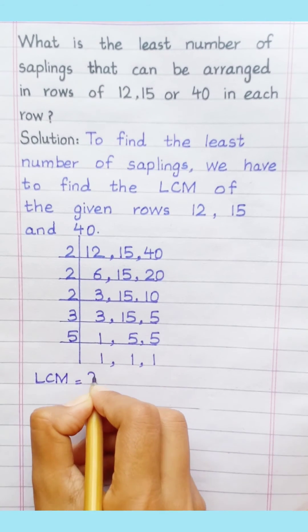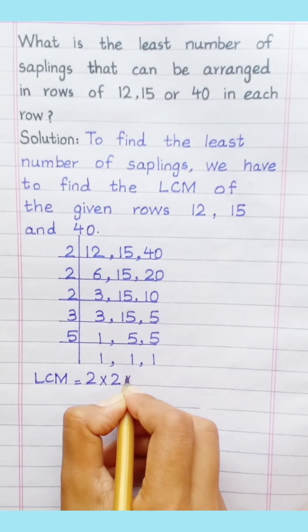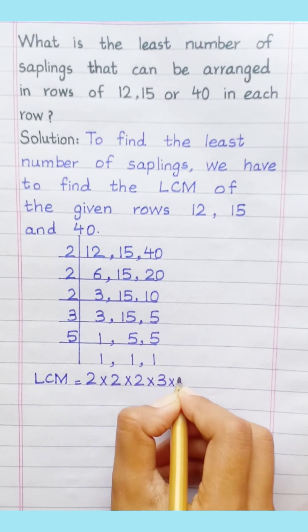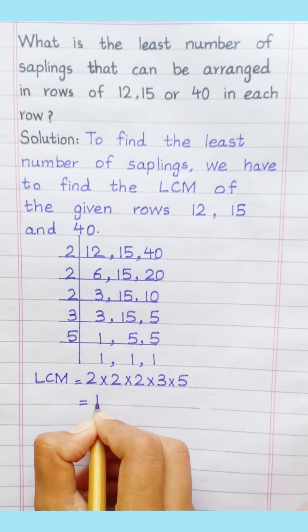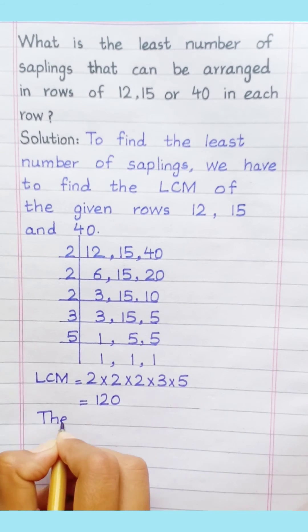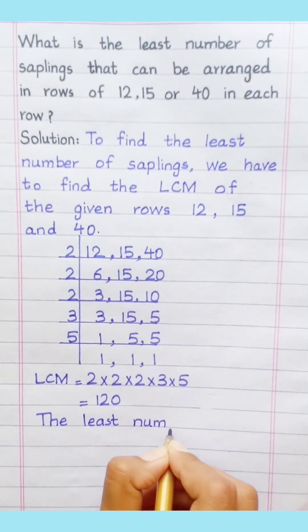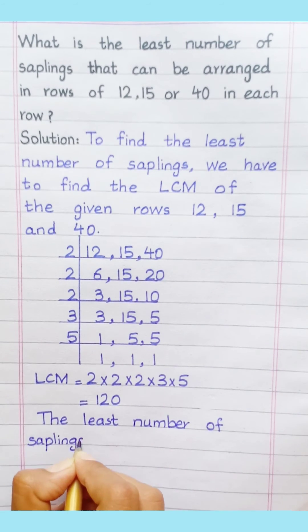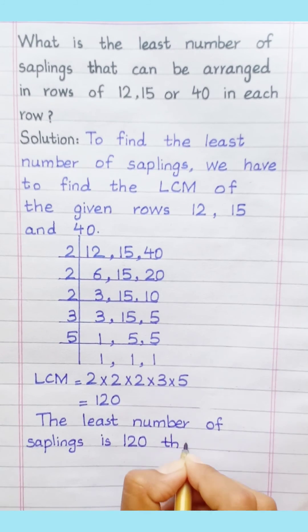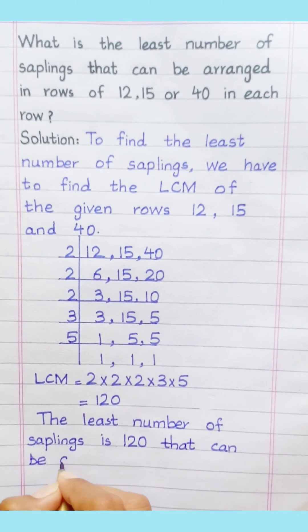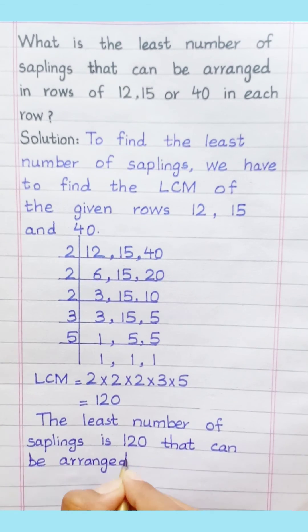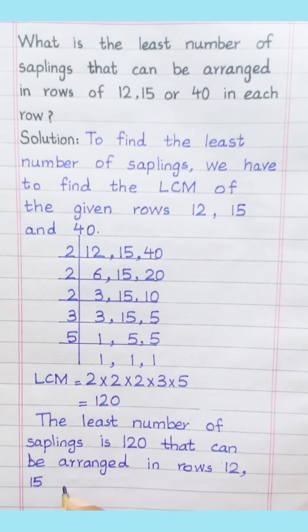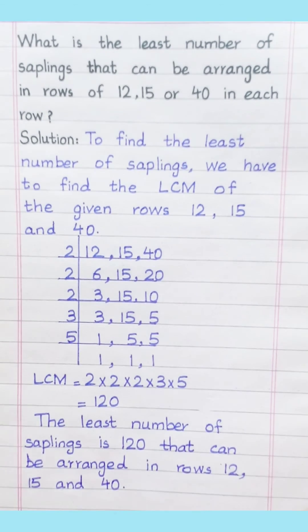LCM equals 2 x 2 x 2 x 2 x 3 x 5. The least number of saplings is 120, that can be arranged in rows of 12, 15, and 40.